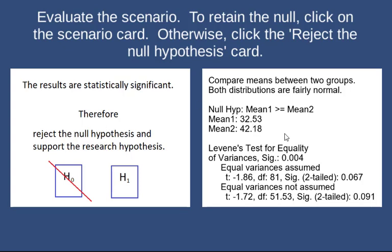Here's our scenario: compare means between two groups. Both distributions are fairly normal. However, there's not a guarantee that the variability of the two distributions is similar, so there'll be a test for that. We'll look first at the null hypothesis, which says that the mean for group 1 is going to be larger than or equal to the mean for group 2.